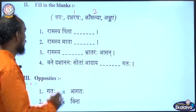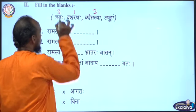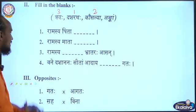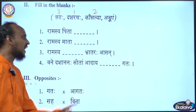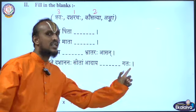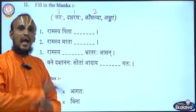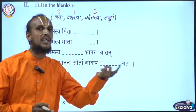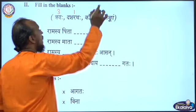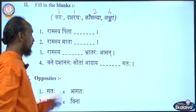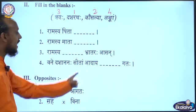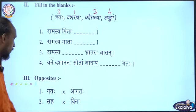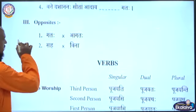So: Ramasya Trayaha Bharataraha Asana. Then the last one: Vane Dashanana Sita Adaya Dash Gataha — after kidnapping Sita, where did Ravana go? To Lanka. So you write Langkam: Vane Dashanana Sita Adaya Langkam Gataha. Now I will teach you the opposites.